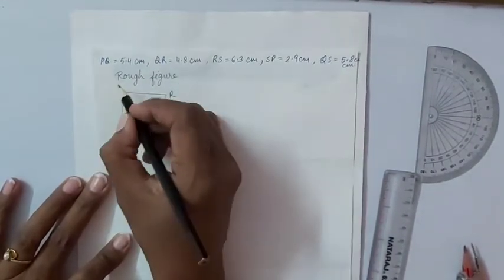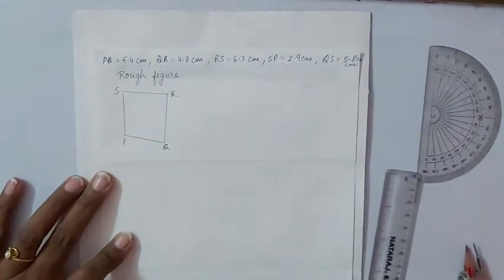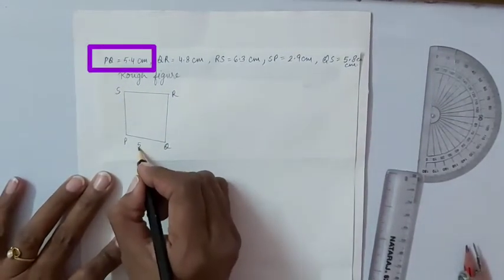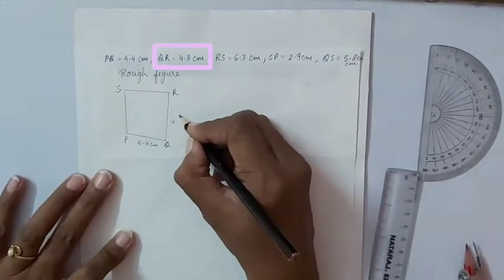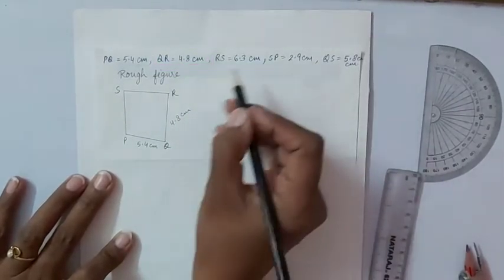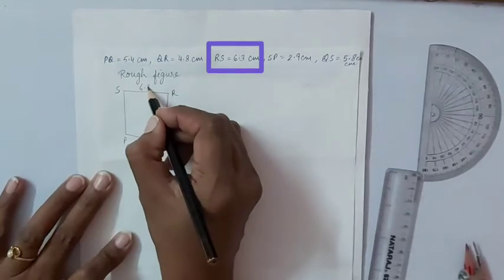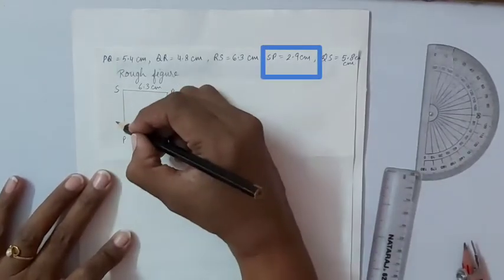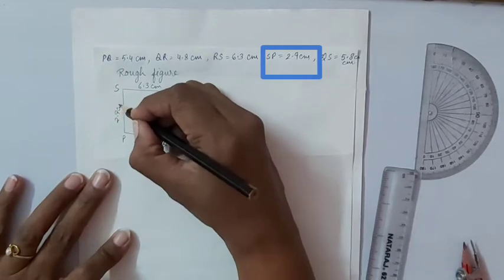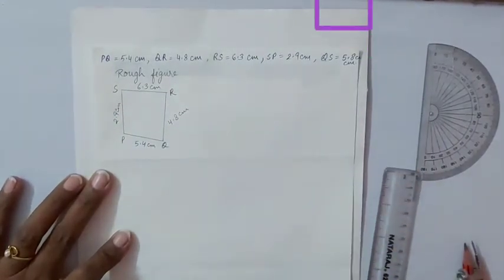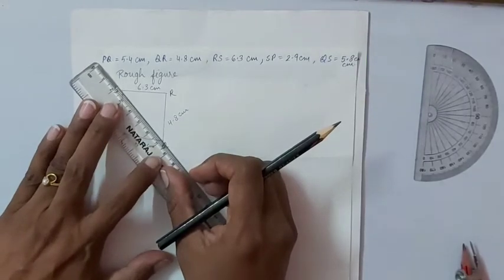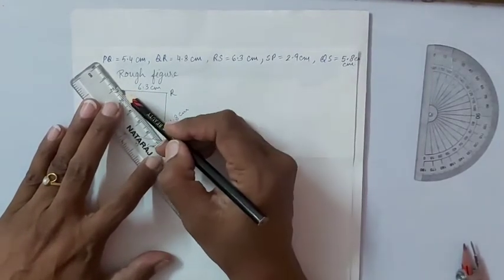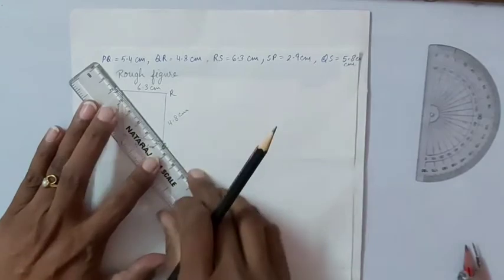So we will start writing name PQRS. PQ 5.4 centimeter, QR 4.8 centimeter, RS 6.3 centimeter, SP 2.9 centimeter and QS 5.8 centimeter. Because QS is given, we will join QS and then we will label it.